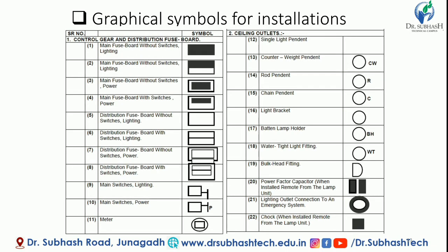Now let's see some graphical symbols for electrical installation used in electrical layout drawings. The main fuse board without switches is described by a black symbol. Main fuse board without switches and lighting is described by a rectangular box that is half dark and half open. Main fuse board without switches and without power is described by a rectangular box with one inner board. Next is the main switchboard and other symbols used in electrical layout for control gear and distribution fuse boards.